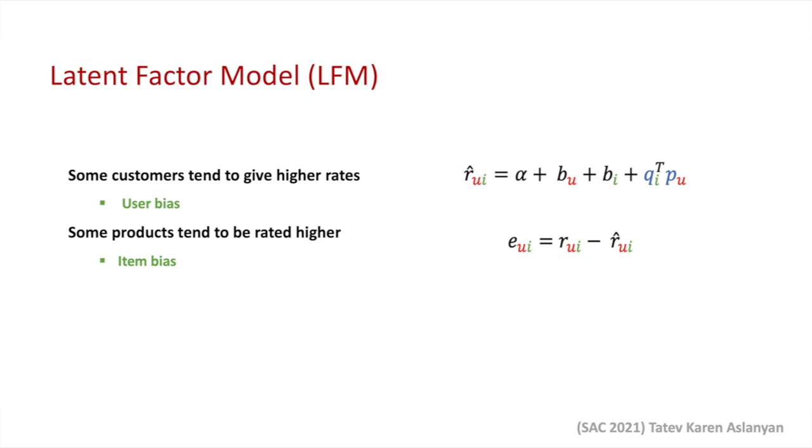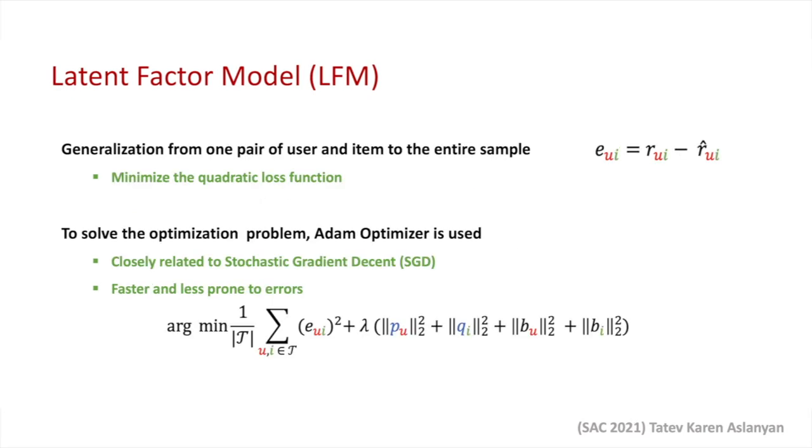So, the goal of the LFM model is to estimate the rating of a user u for item i such that it is very close to the actual rating, such that we minimize the error that we are making. When generalizing this process of minimizing the prediction error of a single pair of user u and item i to an entire sample, we get an optimization problem that can be expressed by the formula that you see at the bottom of this slide. This objective function can be seen as a quadratic loss function, where tau stands for the corpus of all ratings in the training data. The e_ui is the prediction error for the user u and item i, as introduced before, and lambda is the regularization parameter, which defines the importance of the features and how hard the unimportant features are penalized. We use regularization to prevent the model from overfitting, given that there are many features included in the training data.